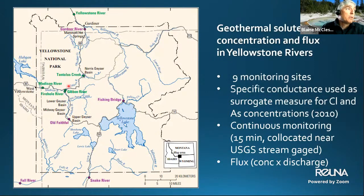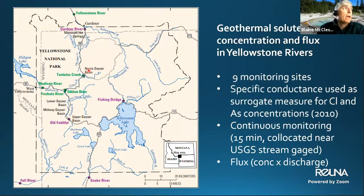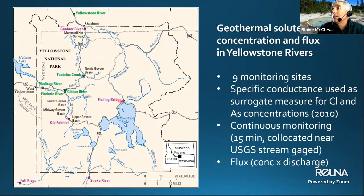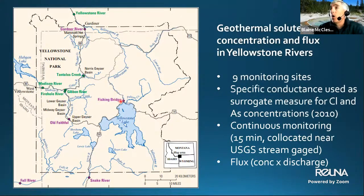The chloride flux program currently includes 10 monitoring sites that all receive thermal input. Sites are monitored on the Yellowstone River, Gardner River, Tantalus Creek, Madison, Firehole, Gibbon, the Firehole River near Old Faithful, the Snake River, Fall River, and Yellowstone Lake outflow at Fishing Bridge. Beginning in 2010, specific conductance was used as a surrogate for chloride, and it also works very well for several other geothermal solutes including arsenic. Specific conductance probes are co-located near USGS stream gauges to collect 15-minute data.